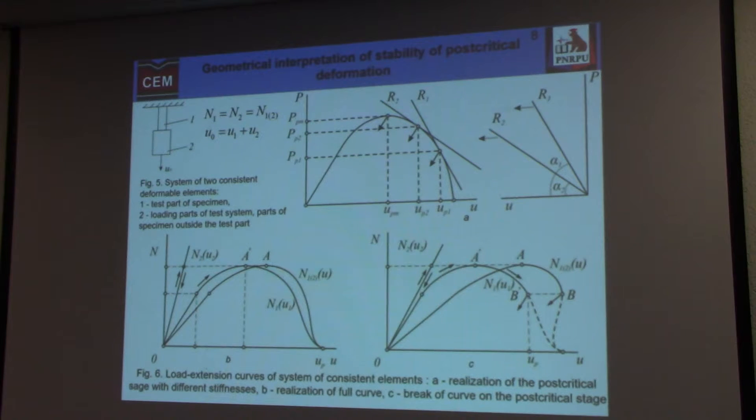Two cases of deformation of the system are possible. In the first situation, when we have high stiffness of loading system, we have full strength of loading curve with full post-critical deformation stage. In other case, when we have low stiffness of loading system, we have only part of post-critical deformation.